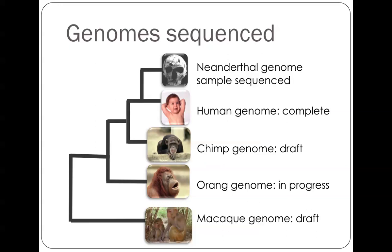Currently, what have we got? We've got the Neanderthal genome — I'm not going to say much about that today because that's next year's module. We've got the human genome, the chimp genome, the orangutan genome, and in fact a gorilla genome as well — the orangutan genome is now published, the gorilla genome is about to be published. And we also have the rhesus macaque genome.